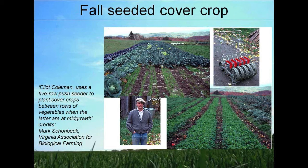He uses what looks like a modified planted junior — a five-row planter that he uses to plant cover crops in between growing vegetables. With the rotations he's developed in Vermont, he'll go through and plant cover crops in between growing vegetables while they're still young. The cover crop gets established and starts to grow, and when the vegetables are harvested, the canopy opens up and the cover crops are poised to just burst out and fill that niche.